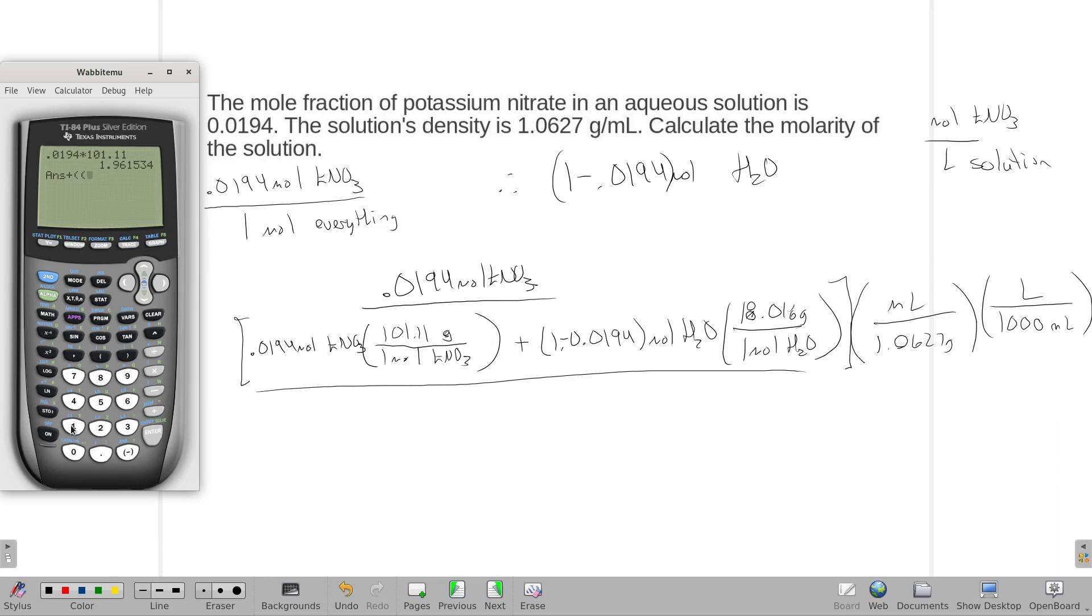I'm going to add to that the mass of the water. I'm going to do two sets of parentheses here, because I'm going to start with the 1 minus the 0.0194, because that will give me the moles of water. And then I'm going to multiply that by 18.016, and this will give me the mass of the entire solution.